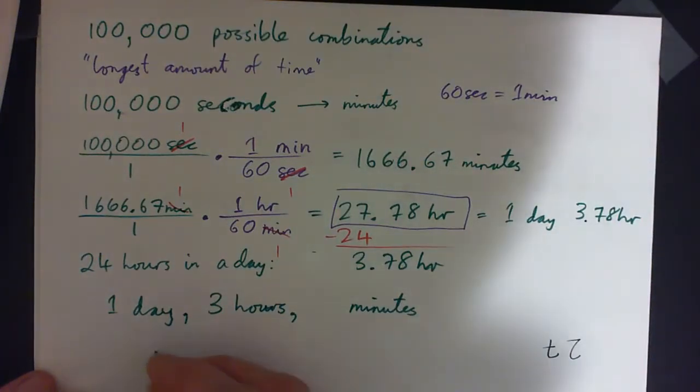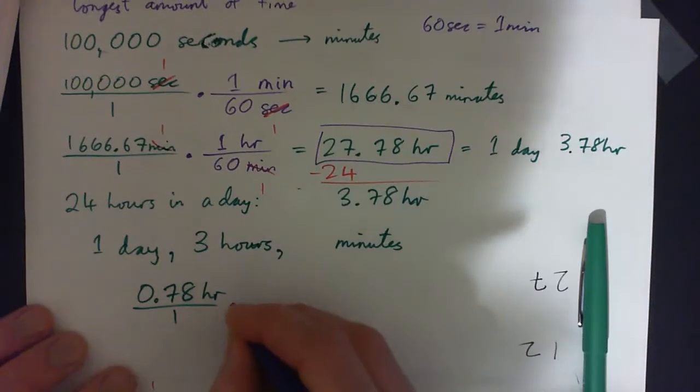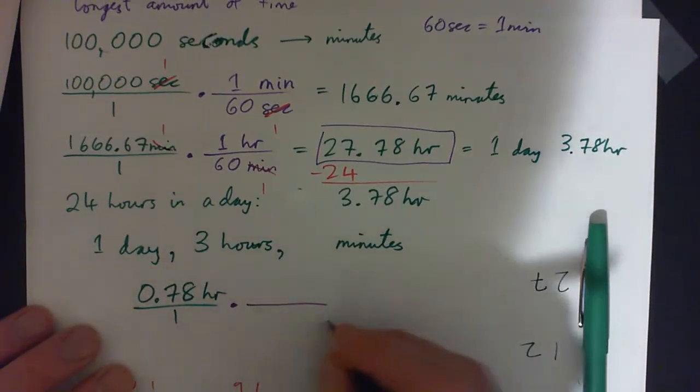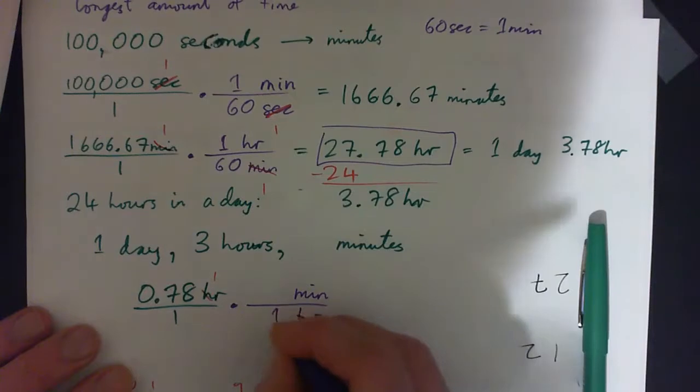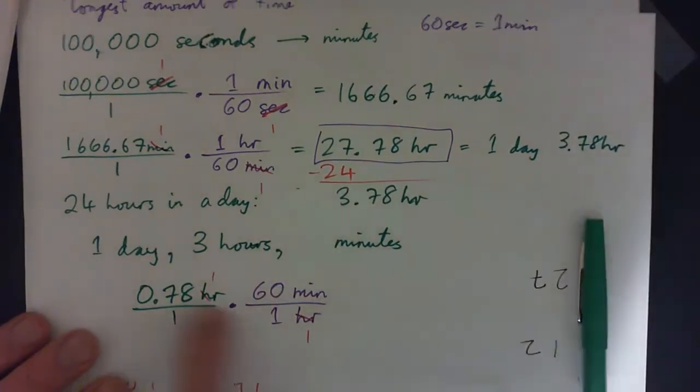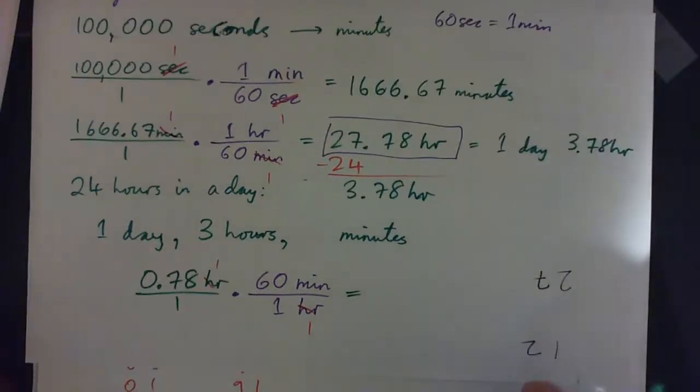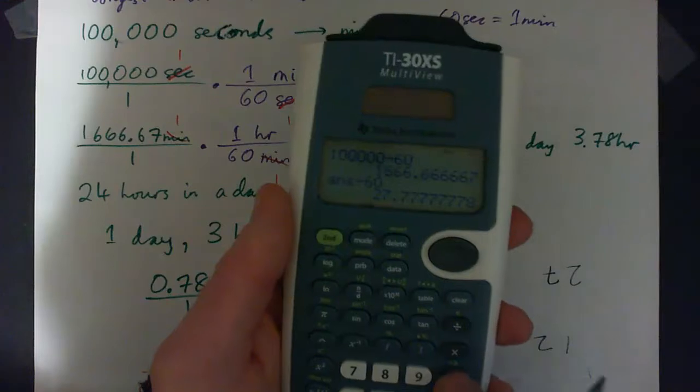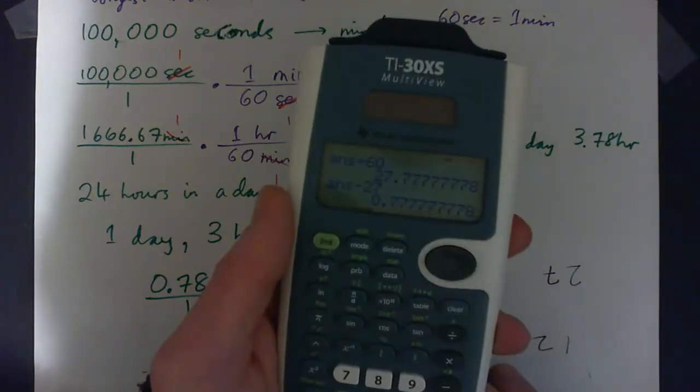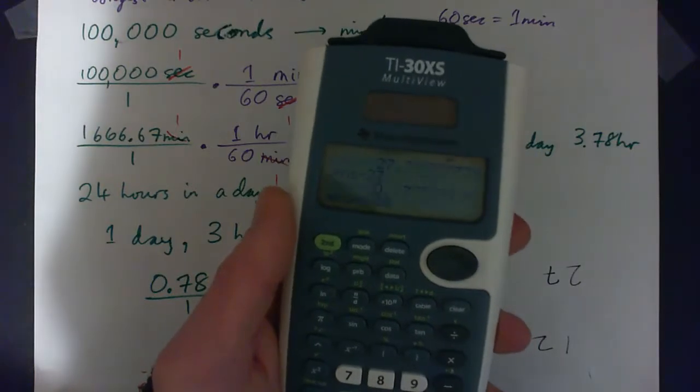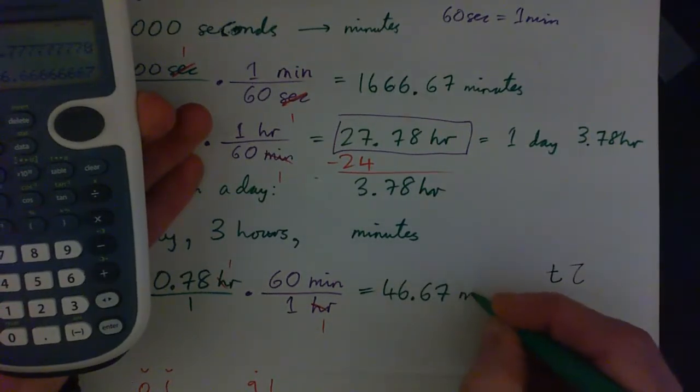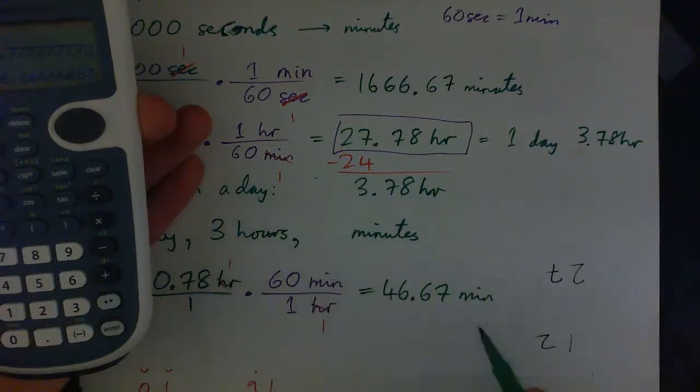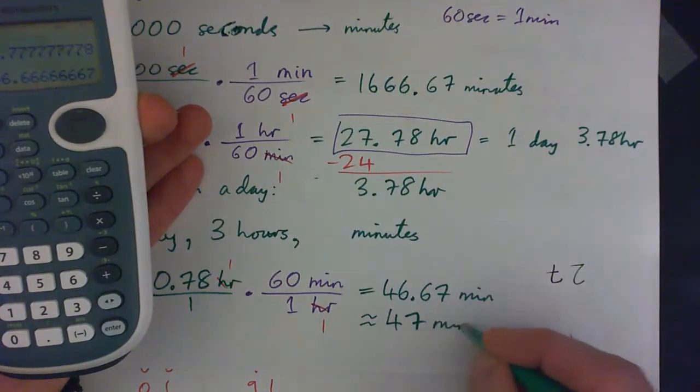You can use the unit conversion, times that by 60 to convert it from hours to minutes. One hour is 60 minutes. 0.78 times 60 to get the minutes. I'm just going to do this on the calculator, minus 27 to get that exact decimal, and then times that by 60 again. That gives me 46.67 minutes. We want to round it to the nearest minute, so we'll go 47 minutes.